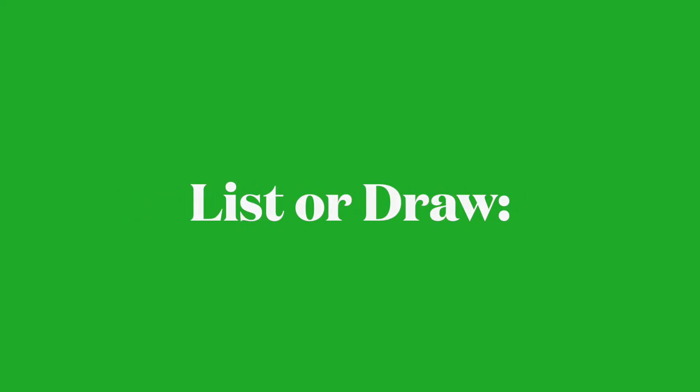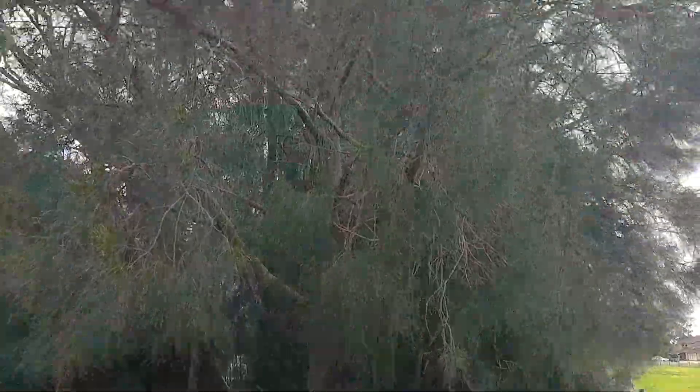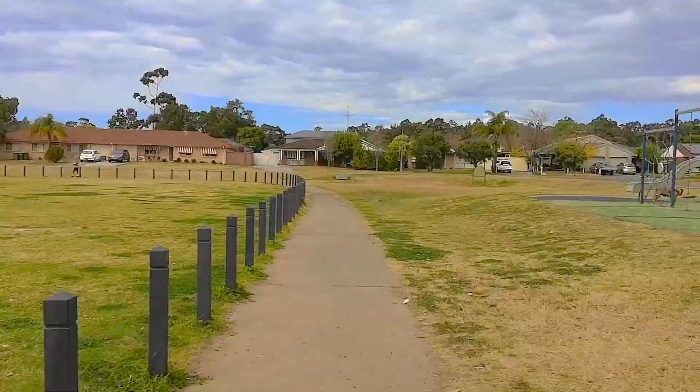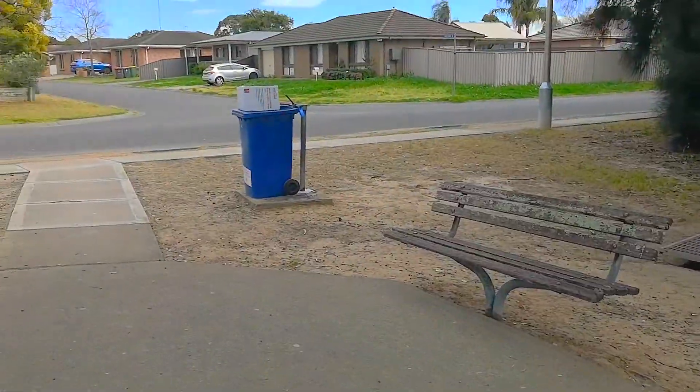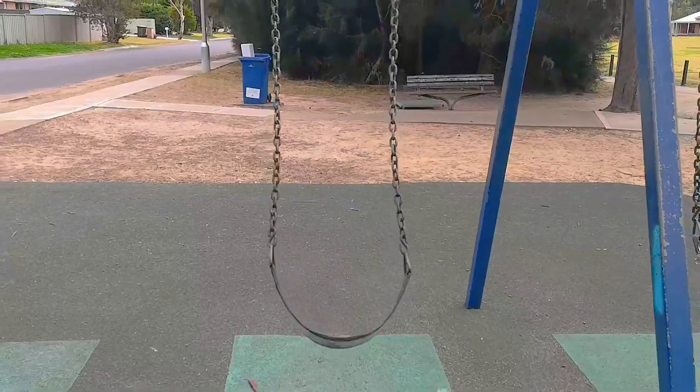We need to think of and either list or draw five features at our local park. Those could be things like the trees, plants, paths, play equipment, bins, or even a barbecue area if your park has one.